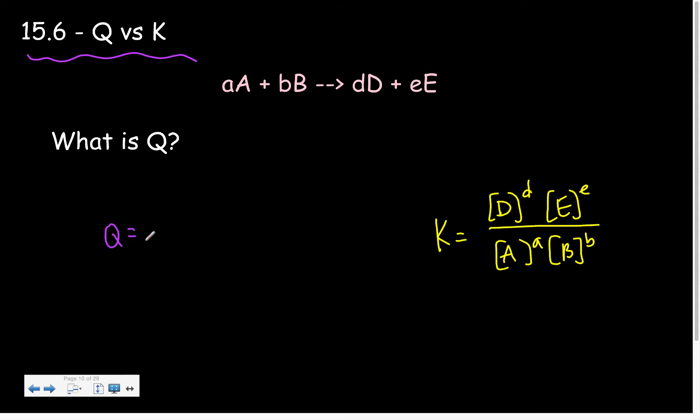These are the concentrations when equilibrium has been reached. Now, Q is like an instantaneous picture of where my reaction is. And it is also products raised to their respective coefficients over my reactants raised to their coefficients. This though is an instantaneous view.